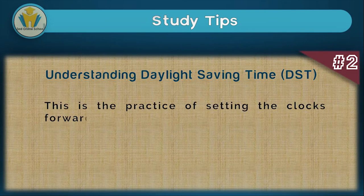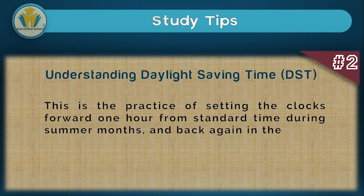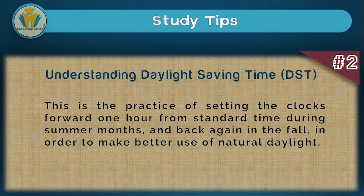The second study tip is about daylight saving time. This comes about due to the change in length of day and night. It is the practice of setting the clocks forward one hour from standard time during summer months and back again in the fall, in order to make better use of natural light. So daylight saving time is essentially the adjusting of clocks due to the change of the duration of day and night, to make better use of natural daylight.